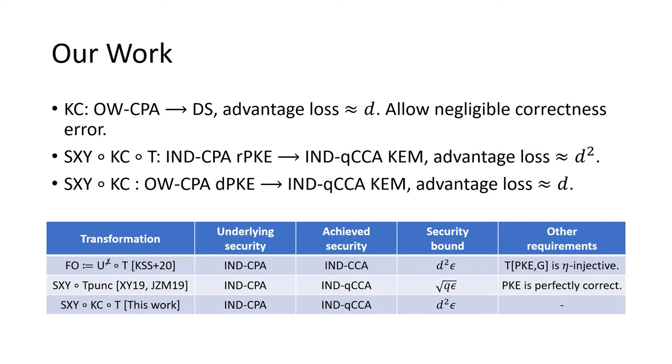In our work, we reduce the security loss of KC to about D using the measure-rewind-measure one-way-to-hiding. Moreover, we remove the requirement of perfect correctness.